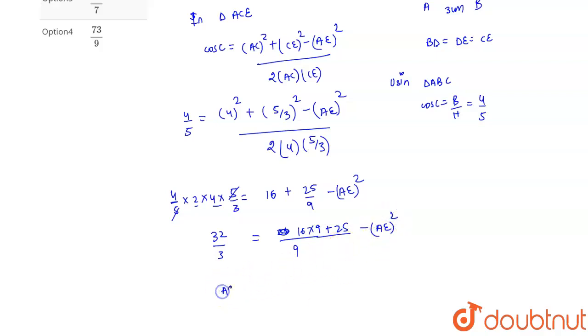So on taking AE to this side, we get AE whole square is equal to 16 into 9 is 144 plus 25 divided by 9 minus 32 by 3.